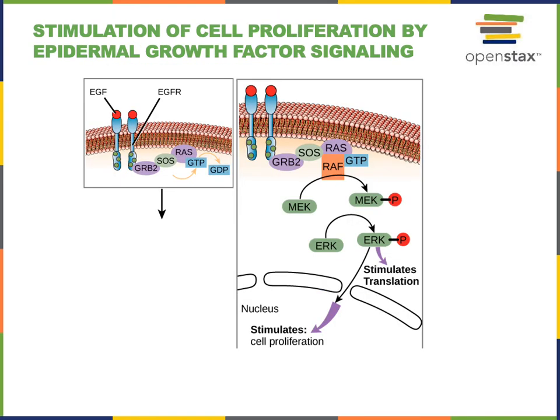Now let's look at the example of the intracellular signal transduction pathway stimulated by epidermal growth factor. Epidermal growth factor binds to a cell surface receptor that is an enzyme-linked receptor protein known as the EGFR, or epidermal growth factor receptor. The EGFR is a receptor tyrosine kinase that will phosphorylate another EGFR, so two EGFR proteins form a dimer that phosphorylate one another, completing the activation of EGFR.